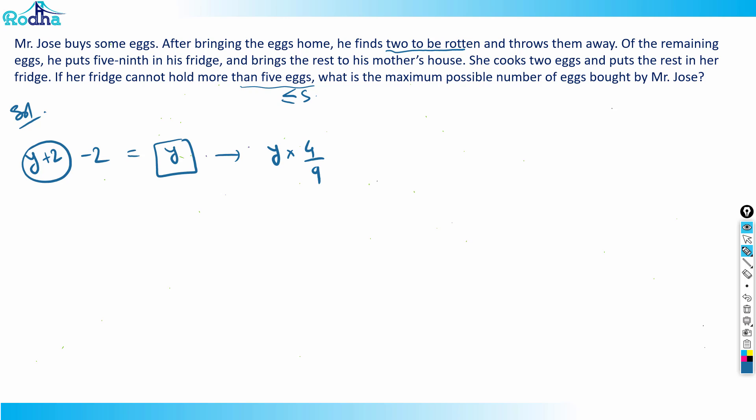Once he has kept five-ninths in the fridge, he's left with four-ninths. With that, he came to his mother's house. What did his mother do? She cooks two eggs and puts the rest in her fridge, and her fridge cannot hold more than five.